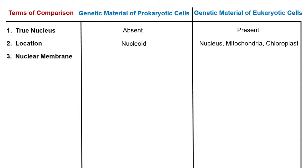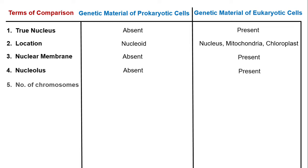The third point of difference is nuclear membrane. The nuclear membrane is part of the nuclear envelope which surrounds the nucleus. Since the nucleus is absent in prokaryotic cells, the nuclear membrane is also absent, whereas it is present in eukaryotic cells. Similarly, the nucleolus is absent in prokaryotic cells and present in eukaryotic cells.